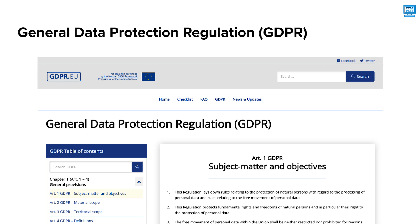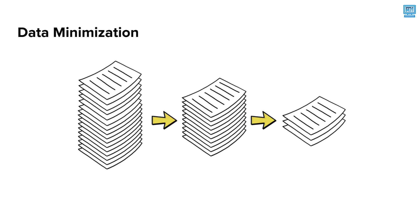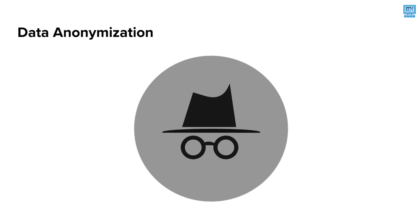Both of these acts have produced techniques to keep personal data private and protected. One is called data minimization, which means that a person or company controlling user data should limit the collection of personal information to what is directly relevant and necessary to accomplish a specific purpose, and retain the data only for as long as is necessary to fulfill that purpose. Another technique is called data anonymization, which works towards protecting private information by removing personally identifiable information from data sets so that the people described in the data can remain anonymous.